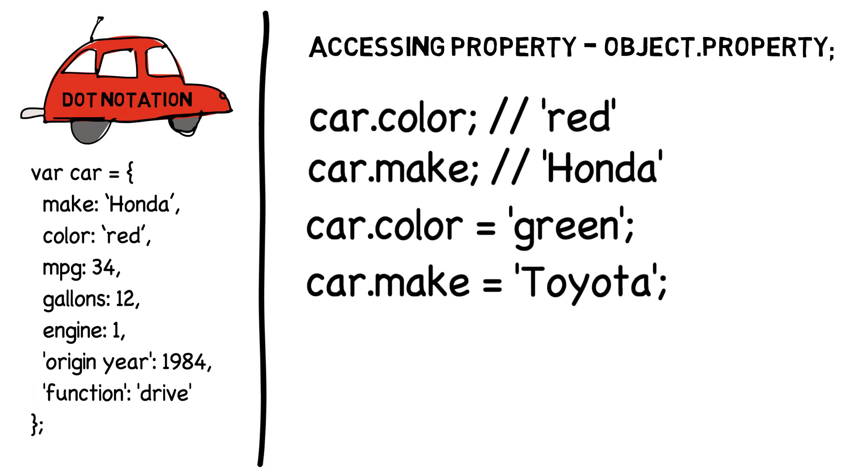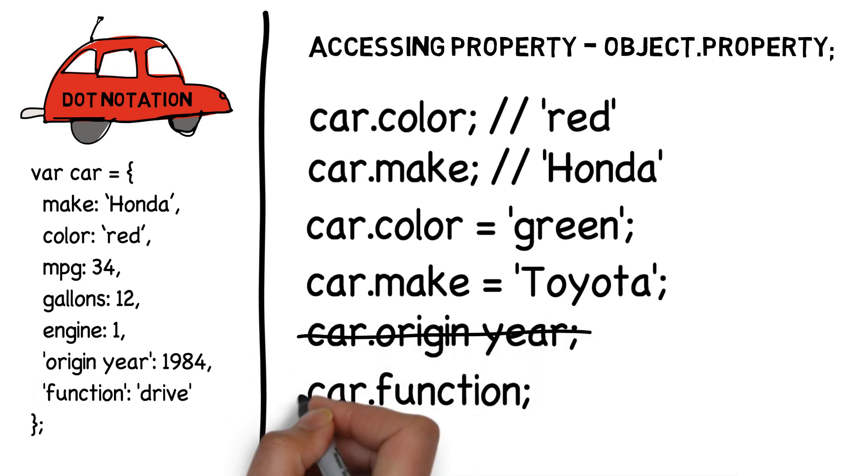As we saw earlier, we can't use dot notation with an invalid variable starting with a number, a JavaScript reserved keyword, or one that contains a space. Trying to access the property's origin year and function are going to error out with dot notation.